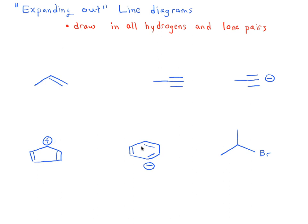One of the underappreciated but important skills in organic chemistry is learning how to interpret line diagrams, specifically how to see the things that are hidden. In line diagrams, we're really drawing a stick figure of a molecule in which we're omitting hydrogens and lone pairs.